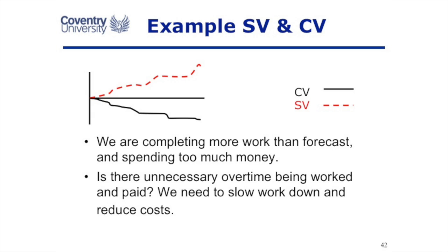In this first example, the cost variance is negative — we're spending too much money — but the schedule variance is positive, we're ahead of schedule. Now these two things could be linked. Are we actually working overtime when we don't need to? Workers very often like to work overtime to get that extra money, but in this case we're ahead of schedule, we don't need to.